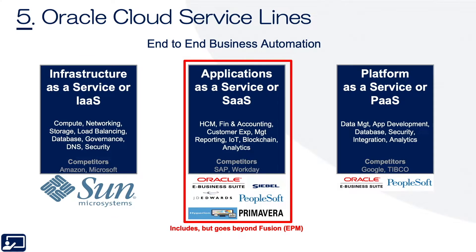Fifth topic: Oracle Cloud service lines. Today, Q3 2021, Oracle goes to market with three service lines. Software as a Service is only one of those, which you can see in the middle. Oracle Cloud is 20-plus years of hardware and software development and acquisitions, all aligned into one of three different services.